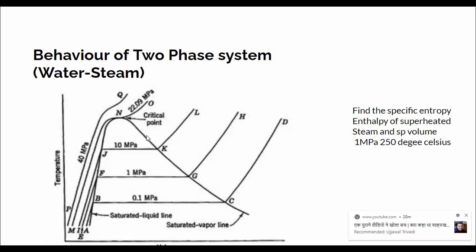If you look at this diagram — the temperature-volume diagram — you can easily locate the 1 megapascal line. This is a constant pressure line. We are talking about superheated steam. The steam is superheated if the temperature of the steam is greater than its saturation temperature.